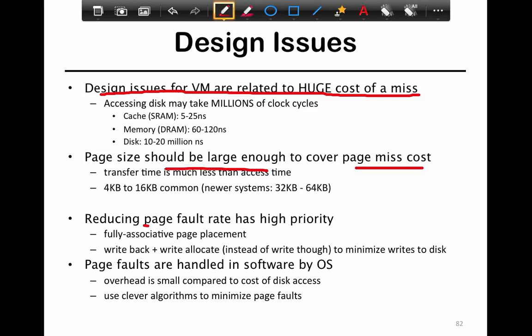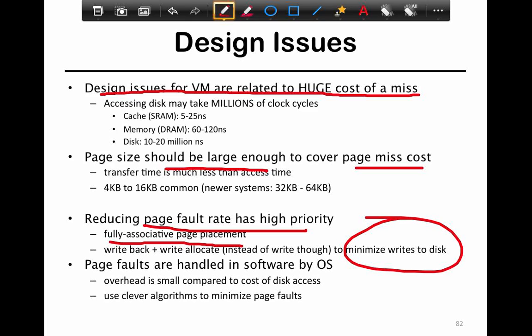Reducing the page fault rate has high priority. Demand paging is fully associative in the sense that any page can reside anywhere in physical memory — you don't bind any process to specific physical memory. It uses write-back to minimize writes to disk, so when you update memory you lazily move it to disk rather than immediately updating it. Page faults are handled in software by the OS, and although OS operations are large compared to cache operations, they are small compared to the cost of moving data from the slower disk.